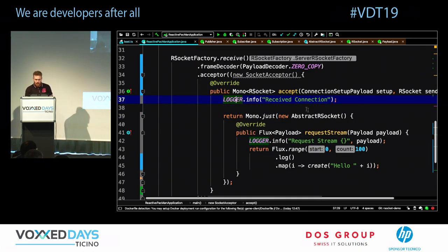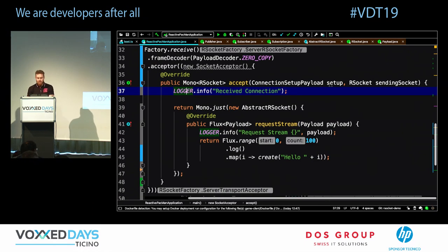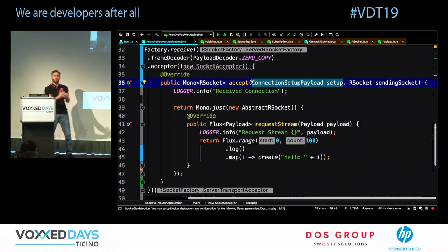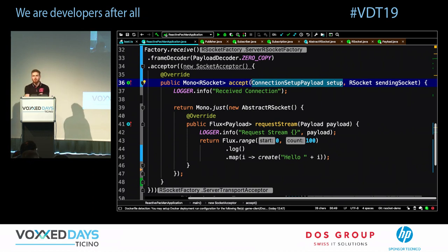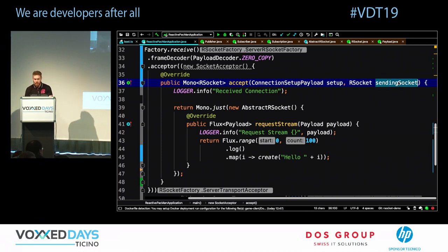You implement a server acceptor for handling connections. Once a client connects, you receive the setup handshake payload — the first payload the client sent — so you can identify who connected and what rights they have, and accept or reject the connection. You also get a representation of the requester — the incoming connection.